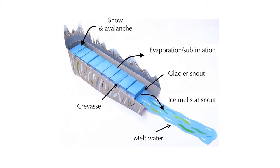The movement of a glacier is called basal sliding. It is caused by friction — because glaciers are so thick and heavy, they exert a lot of downward pressure on the ground beneath them. This pressure creates friction between the ice and the ground, generating heat. This heat melts the ice, and the resulting liquid water acts like a lubricant, allowing the glacier to slide over the terrain.